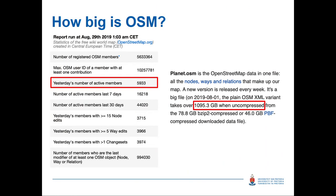How big is OSM? There are currently over 5.6 million registered users of OpenStreetMap. I ran the stats last night: 5.6 million registered users, and only 5,933 of those users actually mapped something yesterday. So there is a very small portion of people that actively map. Another thing we like to impress students with at the University of Pretoria: if you were to download the whole planet file uncompressed, it is over a thousand gigabytes of data.